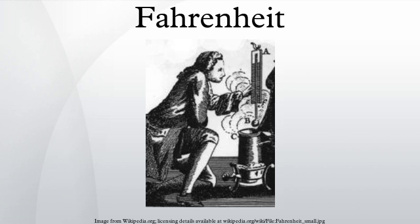Fahrenheit is a temperature scale based on one proposed in 1724 by the physicist Daniel Gabriel Fahrenheit, after whom the scale is named. On Fahrenheit's original scale, the lower defining point was the lowest temperature to which he could reproducibly cool brine, while the highest was that of the average human core body temperature. There exist several stories on the exact original definition of his scale, though some of the specifics have been presumed lost or exaggerated with time.